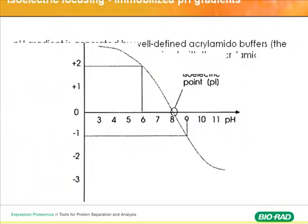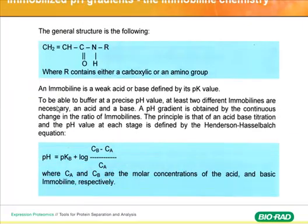What are immobilines? They generate the pH gradient. The chemical formula is like this, where the R group contains either a carboxylic or amino group. These immobilines are usually weak acids or bases, defined by the pKa value of this group. To make the pH gradient in the gel, you simply mix the weak acid and base in a certain ratio, and that will generate the gradient — I will show you the process later.